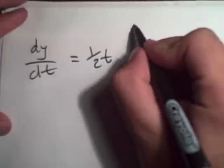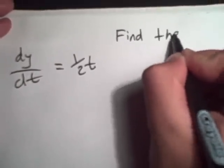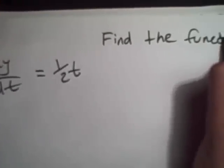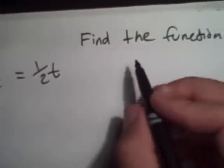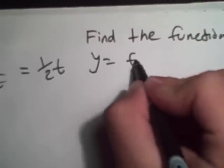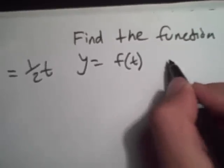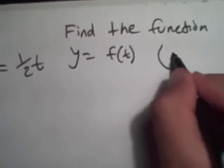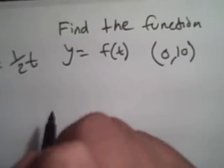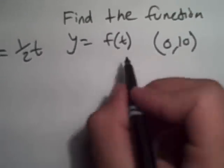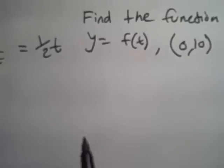Now it's asking us to find the function y equals f of t passing through the point (0, 10). So what do we do?